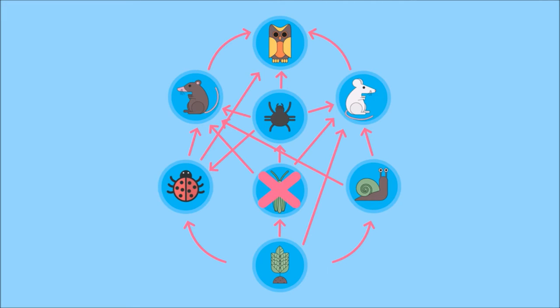If we remove grasshoppers, then the spiders would have to eat more beetles, and so their population would decline. Maybe even go extinct too. This then has a knock-on effect on all the species that feed on the beetles and so on.